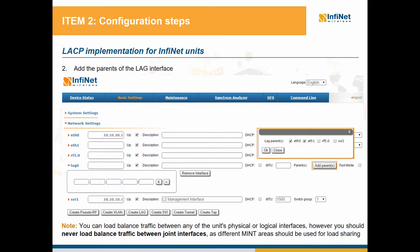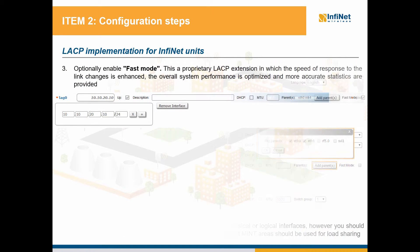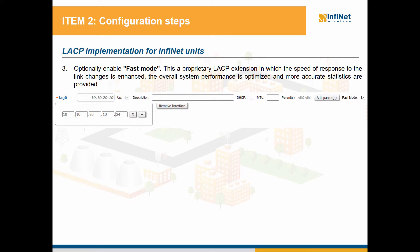An important note is that you can load balance traffic between any of the unit interfaces, including RF or logical PRF interfaces. However, you should never configure load balancing between any joint interfaces. Load balancing works only between different mint areas, so do not join RF and PRF for example and afterwards add them as LAG parents, because this is not a valid configuration. You also have the option to enable fast mode. This is a proprietary LACP extension that provides an enhanced operation over the standard mode. In fast mode, the speed of response to the link changes is enhanced, the overall system performance is optimized, and more accurate statistics are provided.